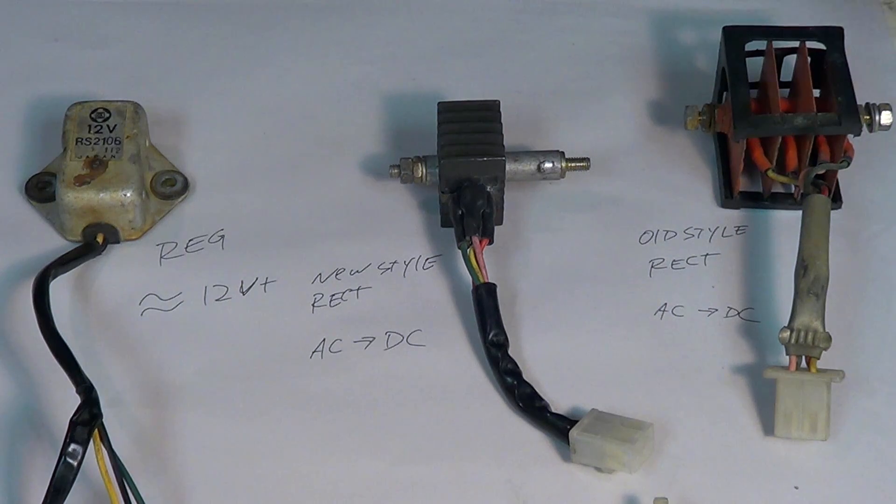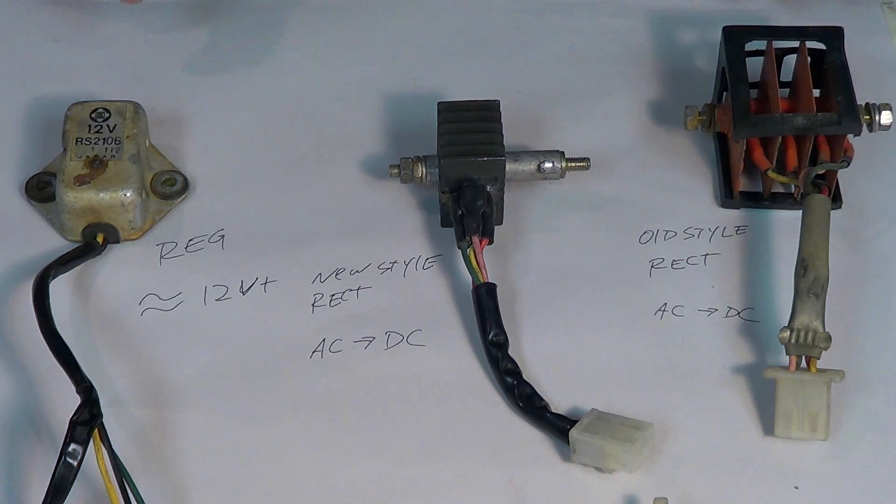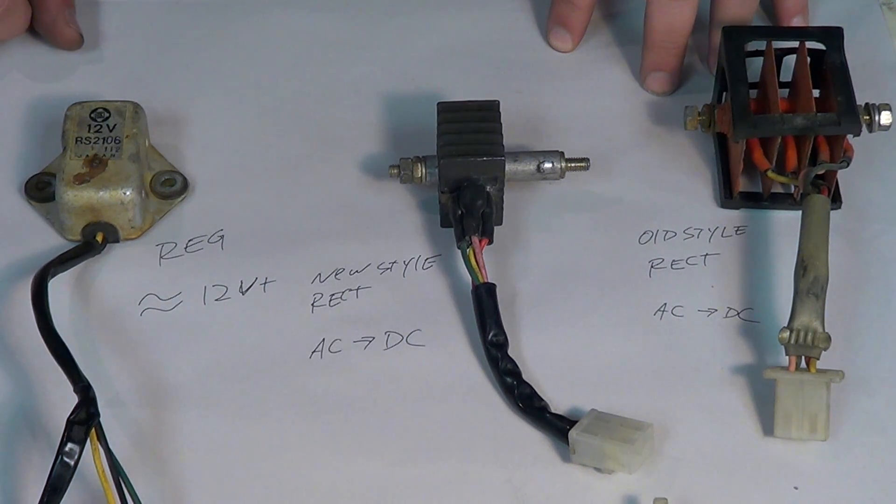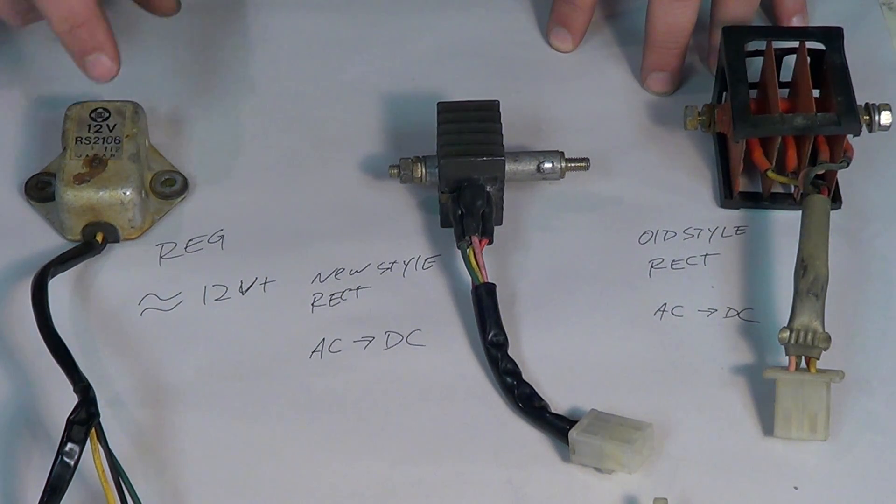So our new regulator rectifier replaces a split system where we had both an independent voltage regulator and an independent rectifier. Real quickly to summarize up what they do and how they look, because you're going to run across different ones on your bike, we'll go through them. This right here is the voltage regulator. It's this kind of little aluminum box with these two wings and bolt holes on it. The regulator's job is to keep the DC voltage about 12 volts. Ideally, you'll be putting out more than 12 volts to keep the battery charged, 12 and a half to 13. Usually when you have charging system problems, this is the number one culprit, but not always. With the new unit, we actually take this and we remove it from the system. So you're gone.